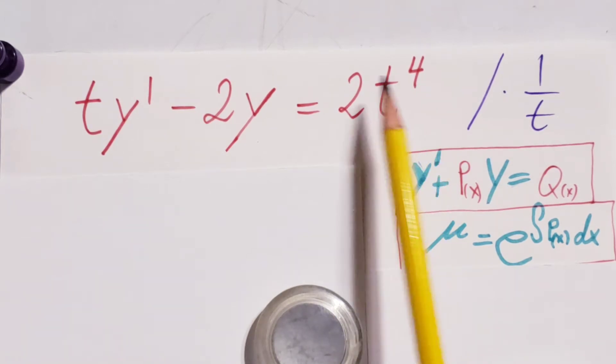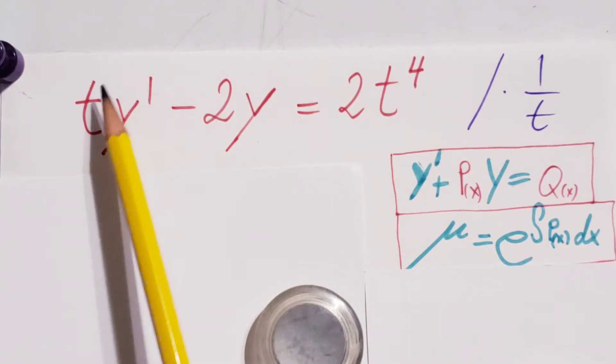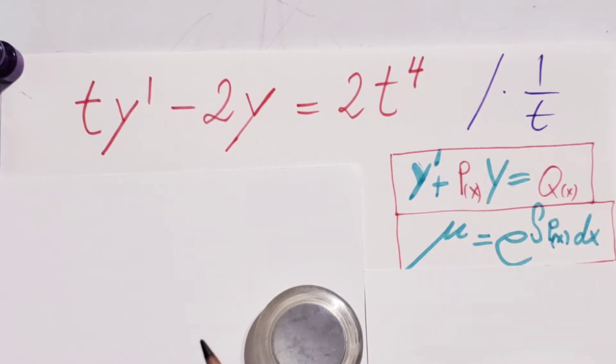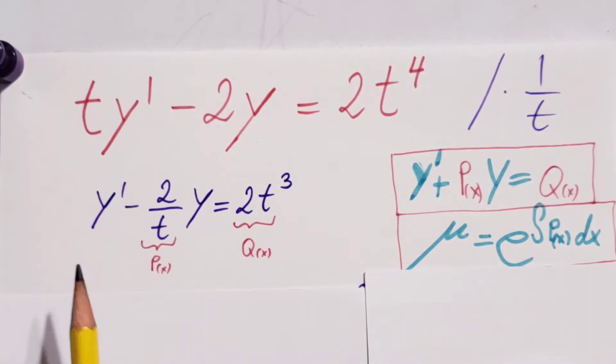Now, here we can see that it's a bit different than what we want here. This is the standard form that we need for it. So in front of y prime, we need a 1. Therefore, I'm going to divide it by t. And here it is: y prime minus 2/t y equals 2t to the third.